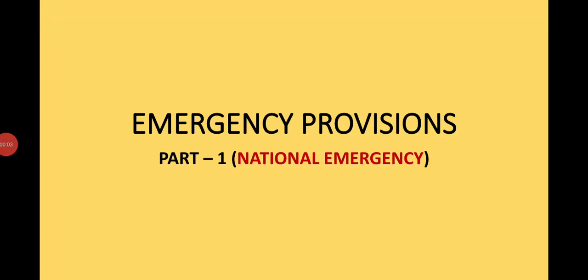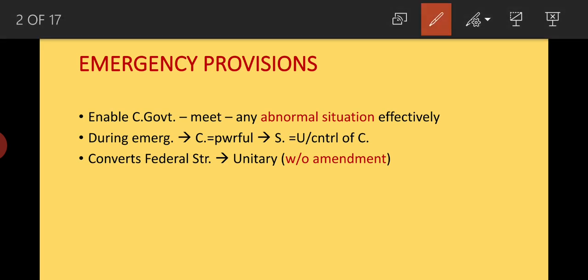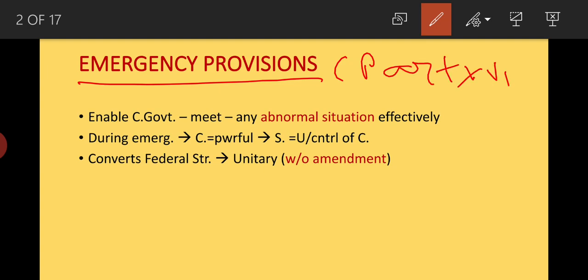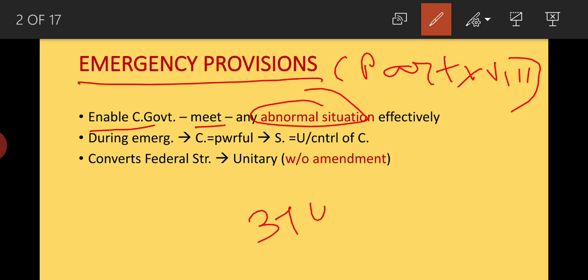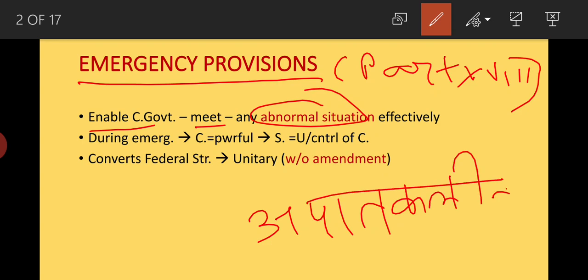Hi guys, today we will discuss about emergency provisions. This is the first part of our video. We will discuss about national emergency. Emergency provisions are part of the Constitution under Part 18. It enables the central government to meet any abnormal situation. During emergency, the center becomes powerful and the state is under control of the center.